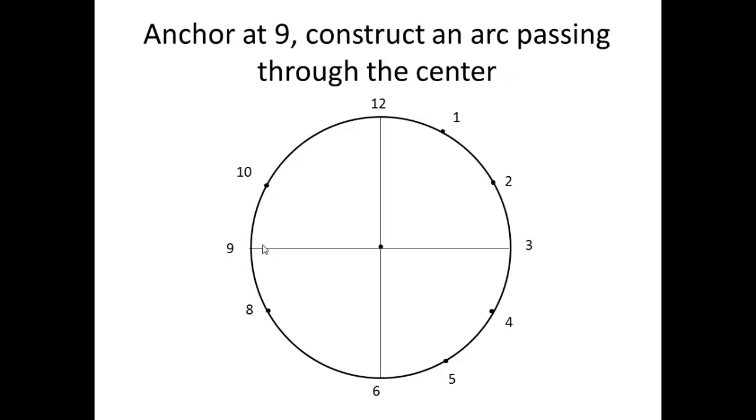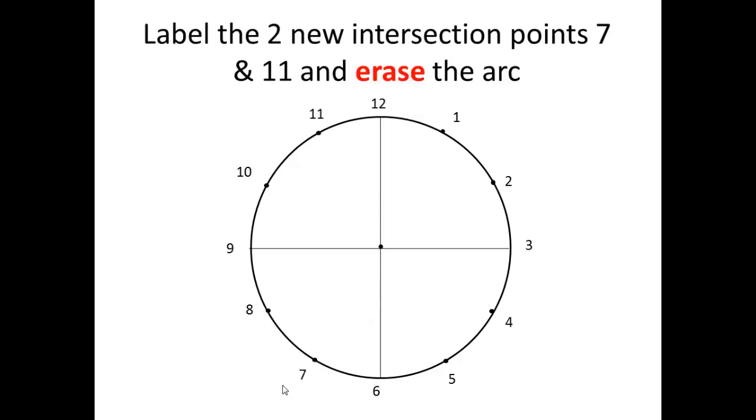Now anchor at 9 o'clock, right here. And construct an arc passing through the center again, like you've been doing before. Label the two new intersection points, 7 o'clock and 11 o'clock. And do erase the arc.